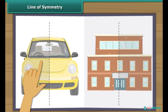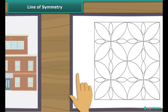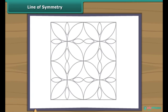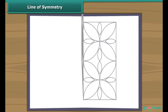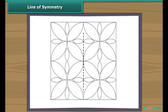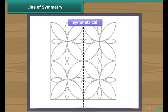Let's take this figure now. When we fold this figure from the center, we will see that the two parts of this figure are coinciding. So we will say that this figure is symmetrical and this line is the line of symmetry.